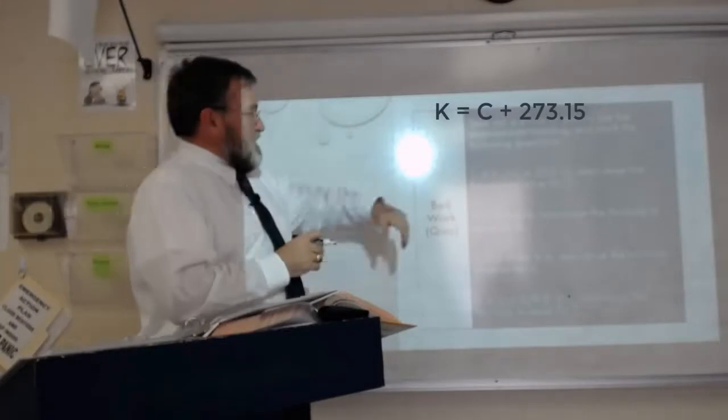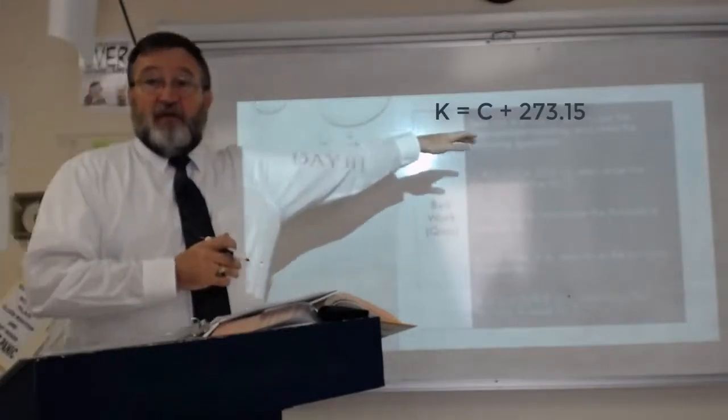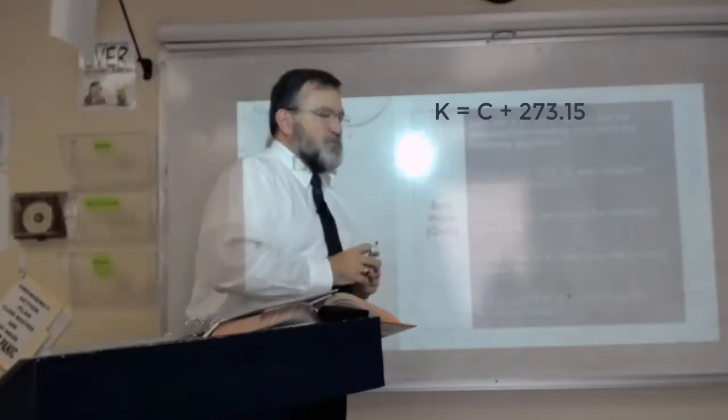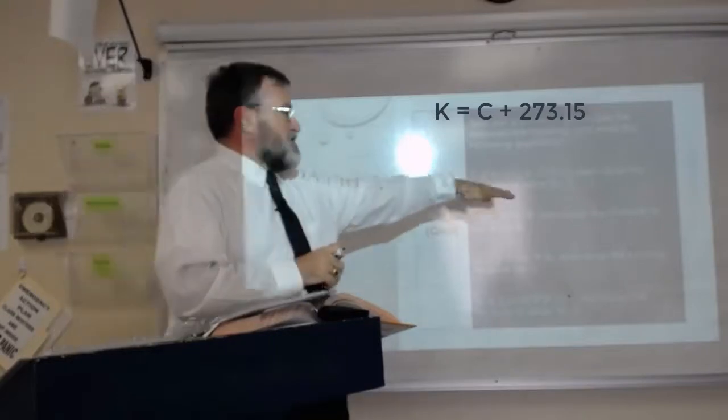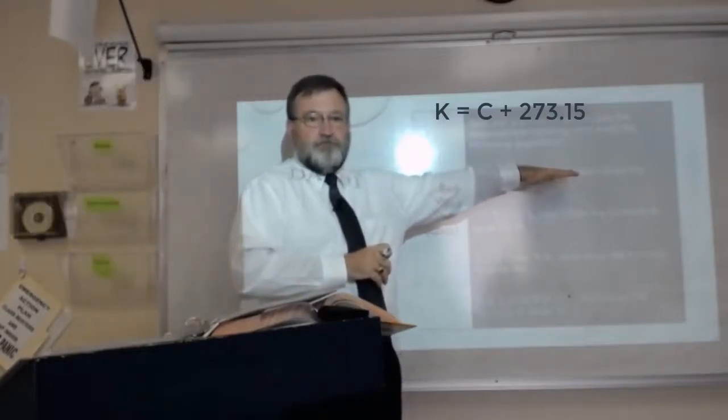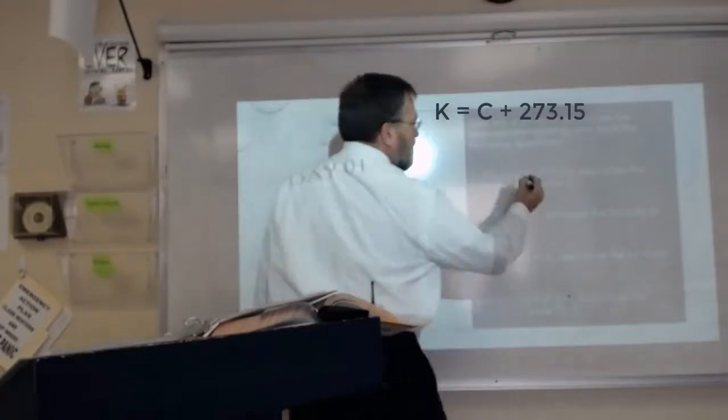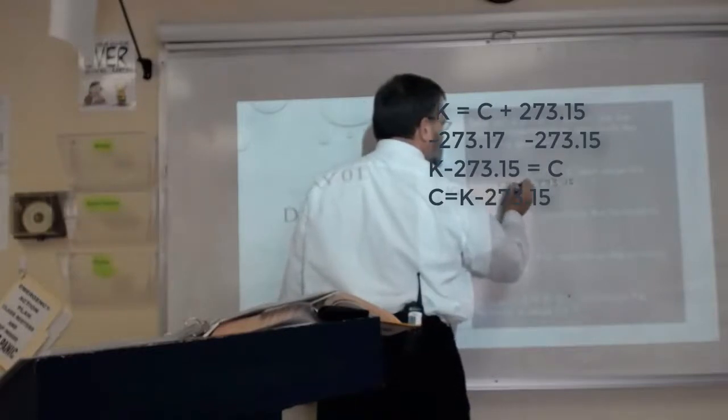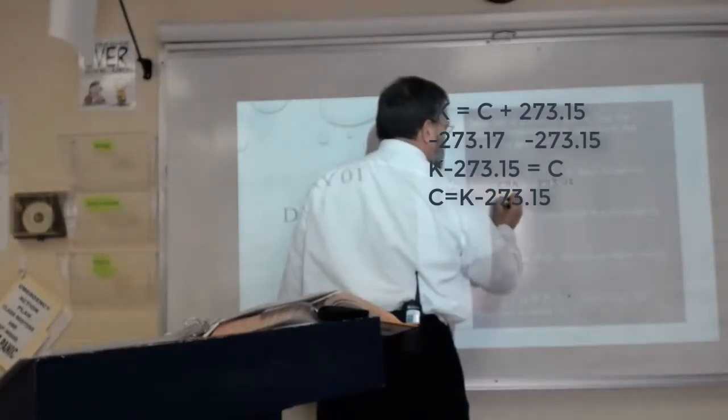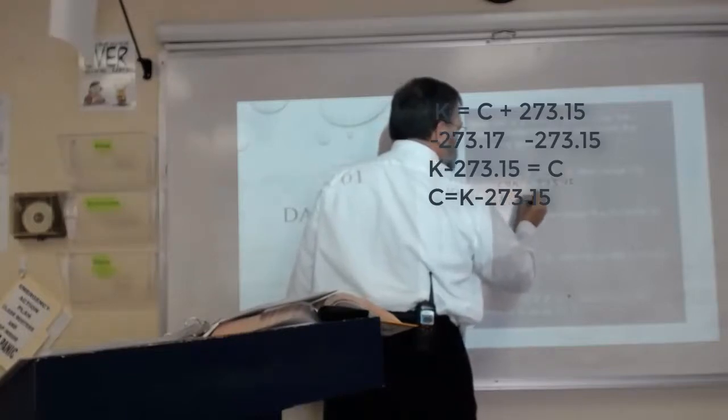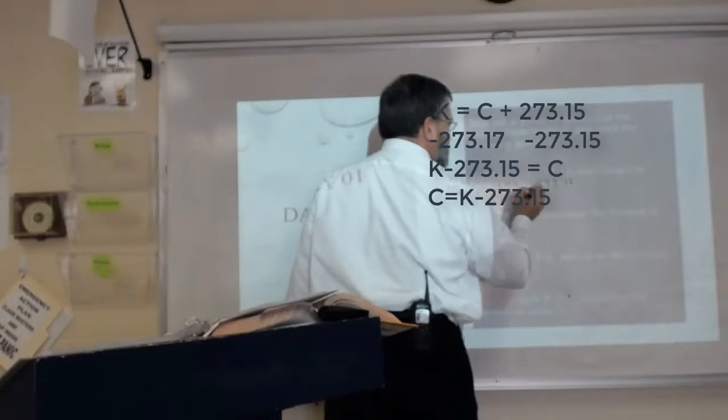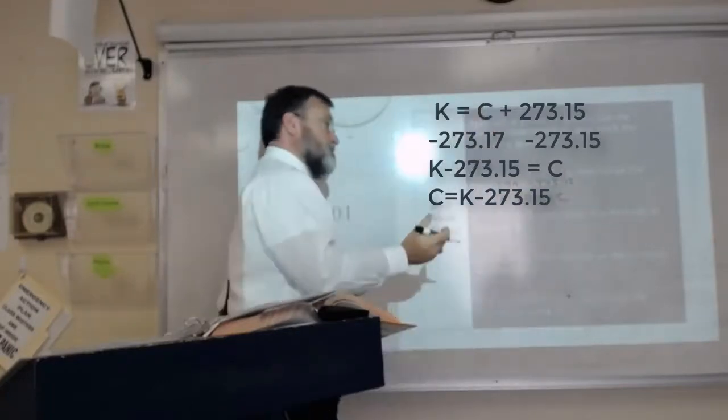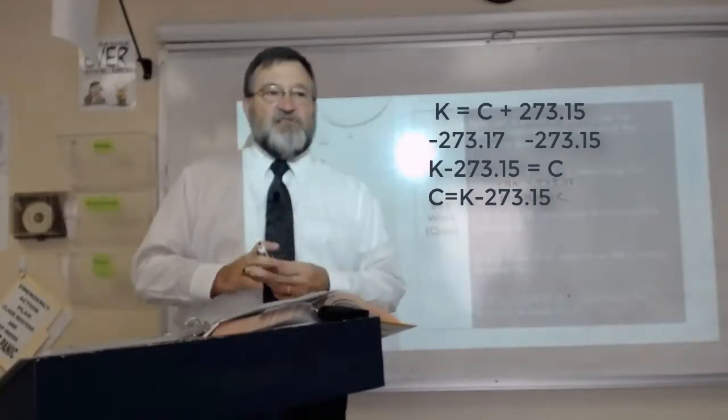So this first one, this is a formula for converting from degrees Celsius into Kelvin, a temperature scale we're going to be using. Kelvin equals degrees Celsius plus 273.15. So how do I rearrange that to solve for Celsius? Subtract that from both sides and that gives me K minus 273.15 equals Celsius.